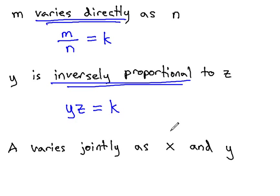A third type of variation is varies jointly. This is where one variable is affected by two other variables. If one of the other variables gets larger, the first variable also gets larger and follows the same pattern.